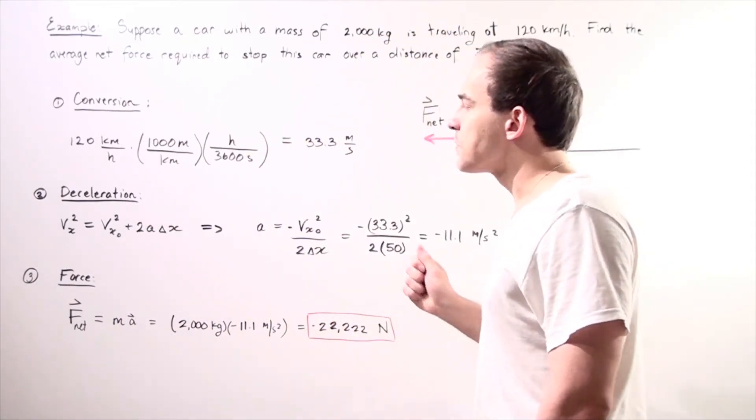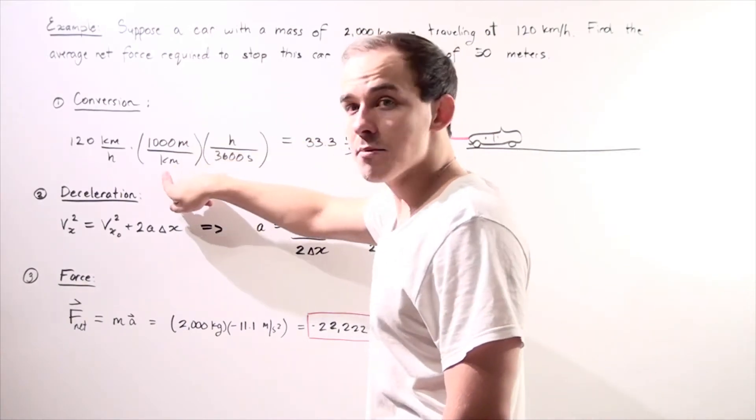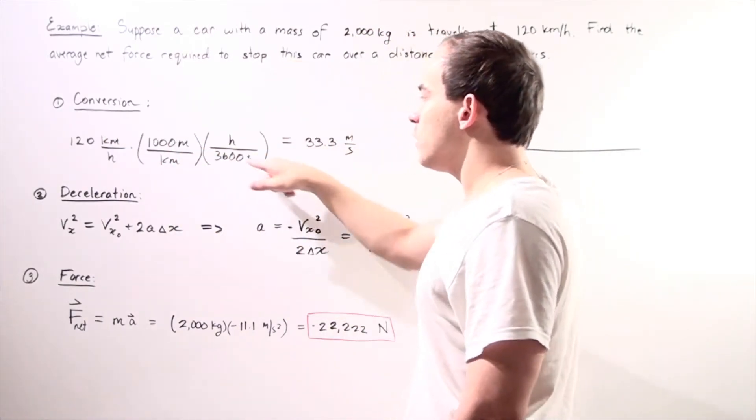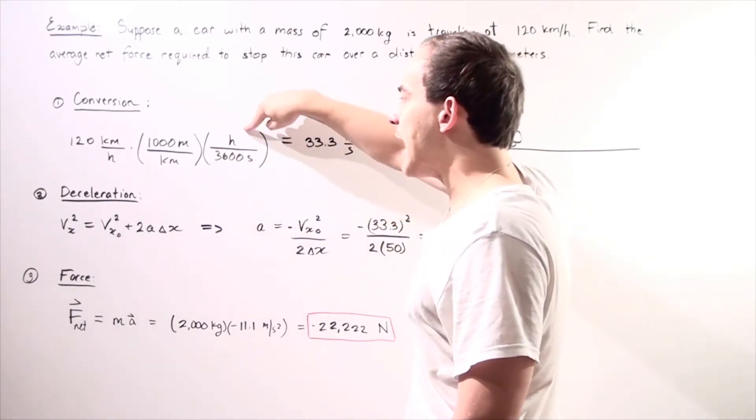So we have 1,000 meters per kilometer, so our kilometers will cancel. And we have 3,600 seconds per hour, so our hours will cancel.